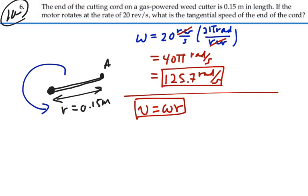So our linear velocity at that point is going to be v equal to the angular velocity, 125.7 radians per second times 0.15 meters.